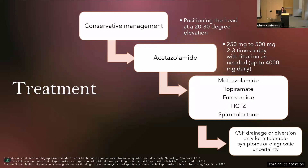The fortunate thing is that RIH does typically self-remit, but the symptoms until that happens can be quite debilitating. We often start conservatively with head positioning, a low-salt diet, and dandelion tea. Next steps — usually the gold standard — is acetazolamide, which is a tricky medication with a lot of harsh side effects. I give patients 125 milligrams to start if they're not experiencing significant symptoms, then titrate up to 250–500 milligrams two to three times a day, and we can titrate further if needed. Alternative treatments include methozolamide, topiramate, furosemide, HCTZ, and spironolactone.